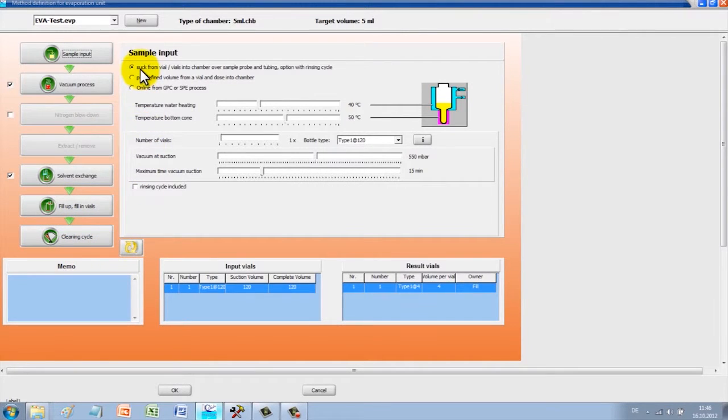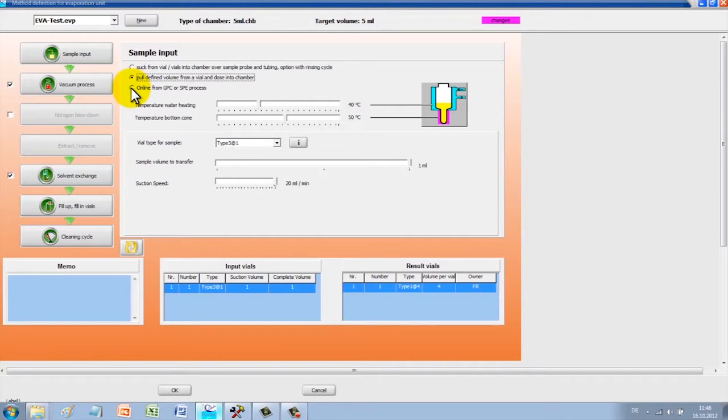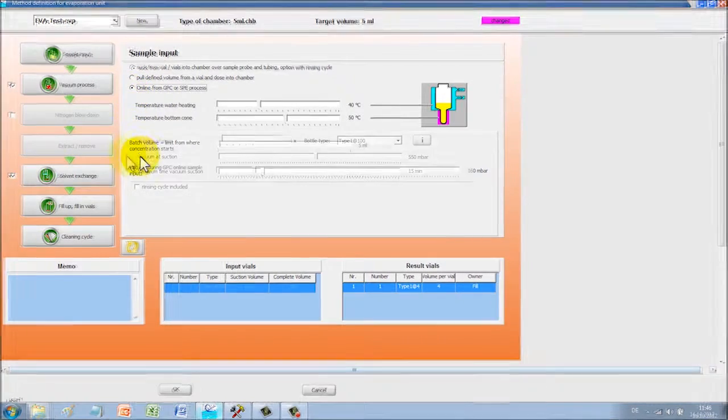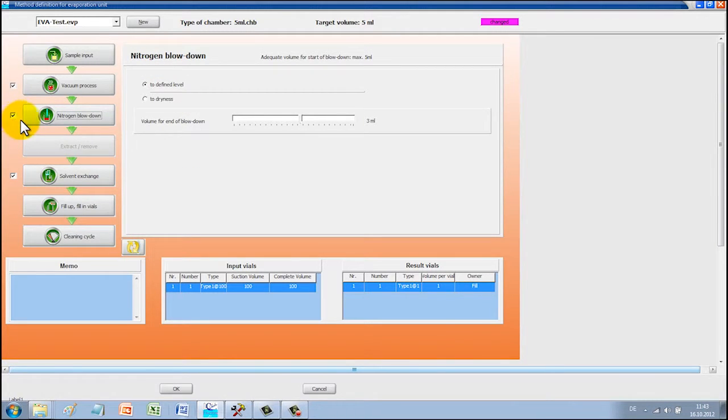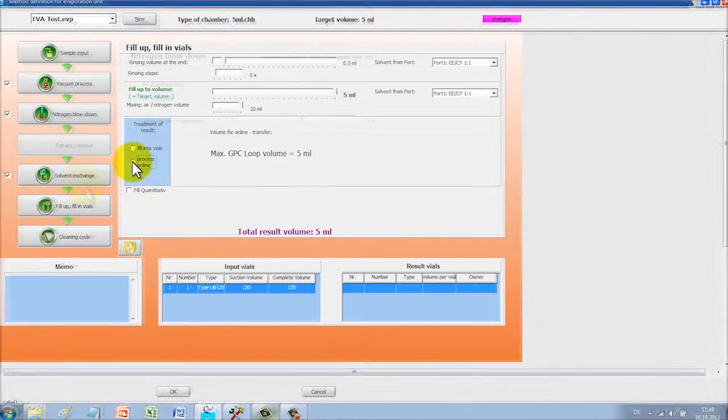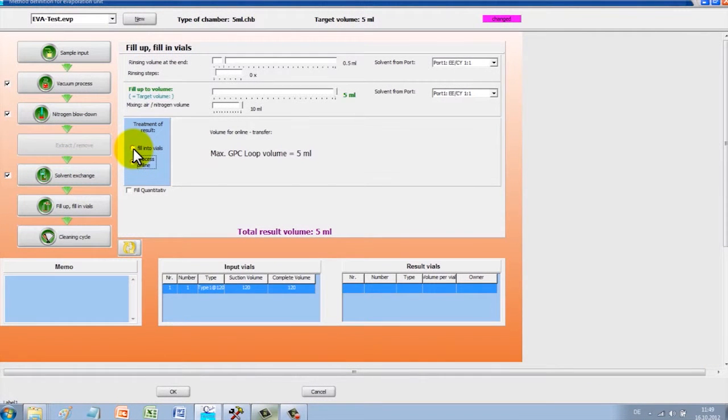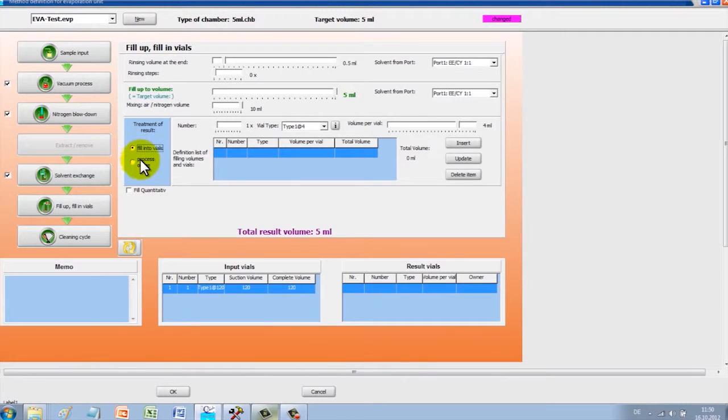Where does the sample come from? Three different options can be selected. The desired evaporation technique, for example vacuum or blowing off with nitrogen, can be selected individually or combined. Where is the sample to go? Here glasses and filling volumes can be freely defined.